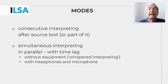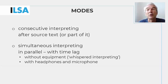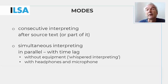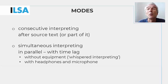By contrast, in simultaneous interpreting, the interpretation is produced not after, but in parallel with source text reception. This occurs with a short delay known as time lag, which results from the need to process and comprehend the source message before it can be re-expressed. When used with spoken languages, simultaneous interpreting creates acoustic interference between the two speech streams. It therefore requires special equipment, except in so-called whispered interpreting, when interpreters speak in a low voice to a listener right next to them.